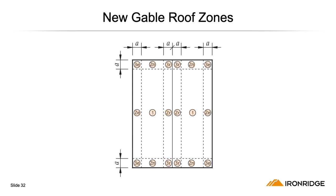This is a diagram of the new roof zones on a gable roof. Zone 1 remains unchanged from 710 to 716. But zones 2 and 3 have been further segmented into 2E, 2R, 2N, 3E, and 3R.